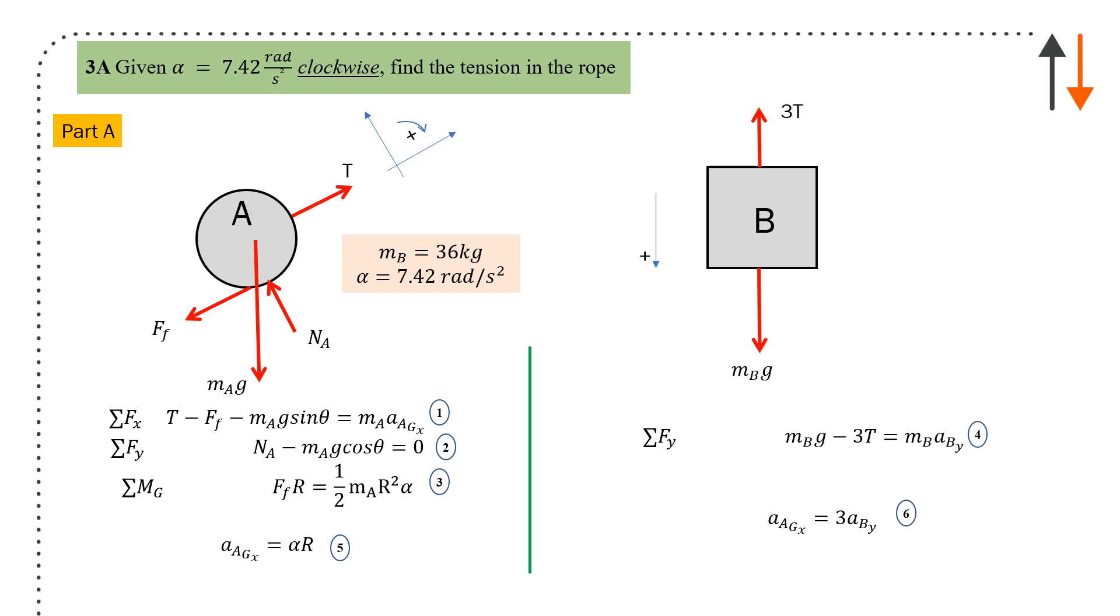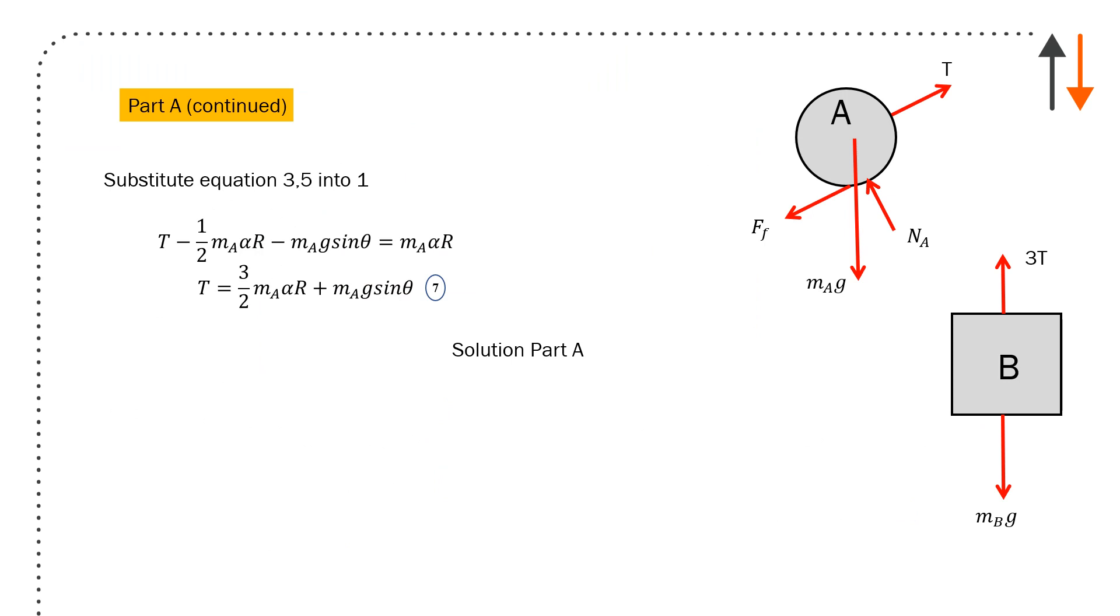You get acceleration a_Gx equals alpha r. For force in y, you have one direction on the force and acceleration. Acceleration a_G with respect to x equals three times acceleration B with respect to y from the kinematics. Six equations: substitute equation 3 and 5 into 1, substitute all the terms, keeping to the same diagram. Please draw your own diagrams and try this out. You get tension equals 146.5 newtons.